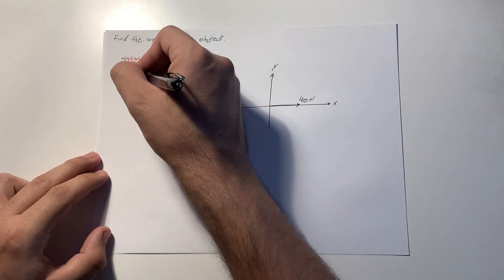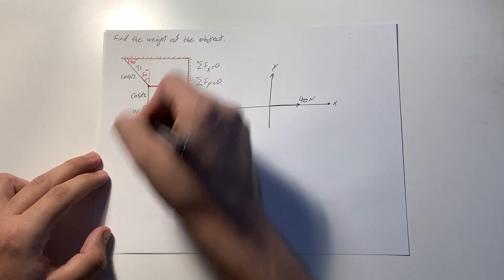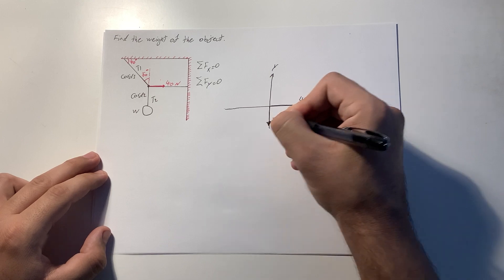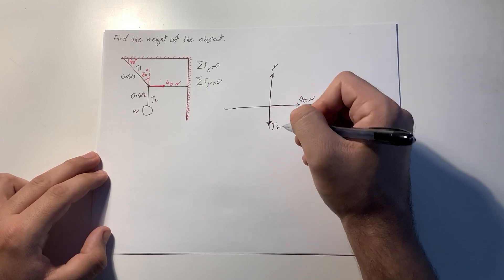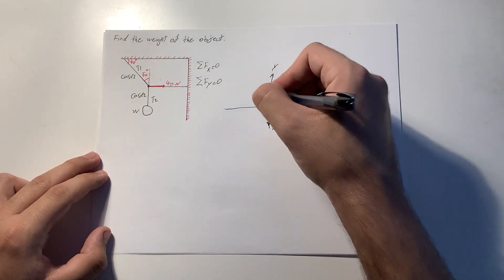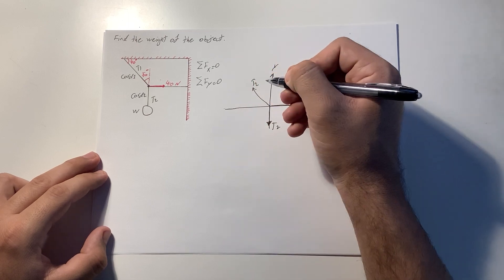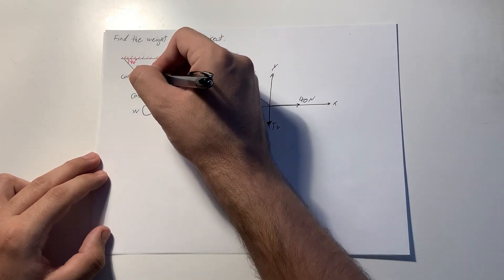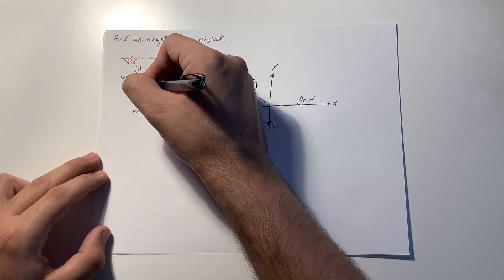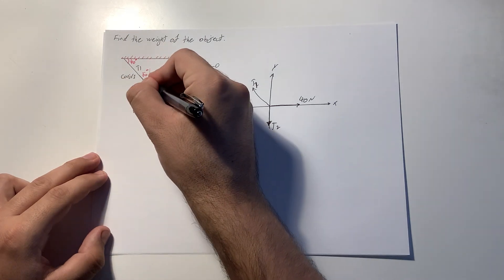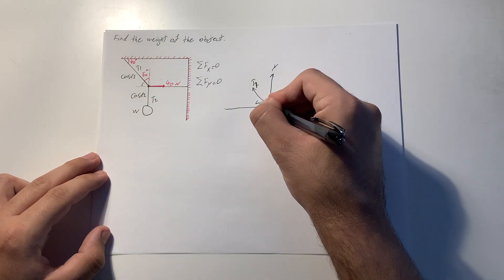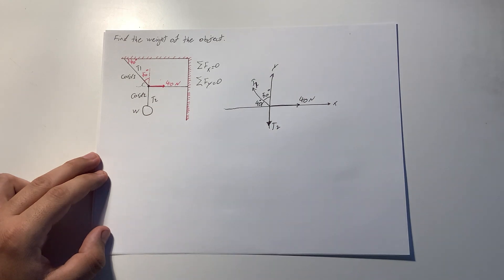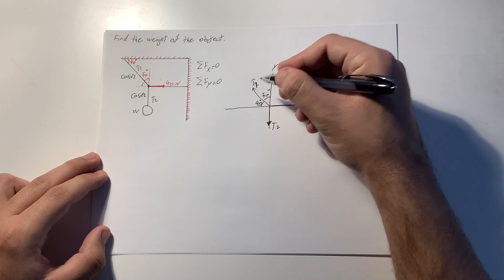If I call the tension in chord 1 T1 and the tension in chord 2 T2, we have T2 in this direction — because gravity is pulling down on the object — and T1 in that direction. We know from the diagram that this angle is 50 degrees, which means this angle here is 40 degrees.